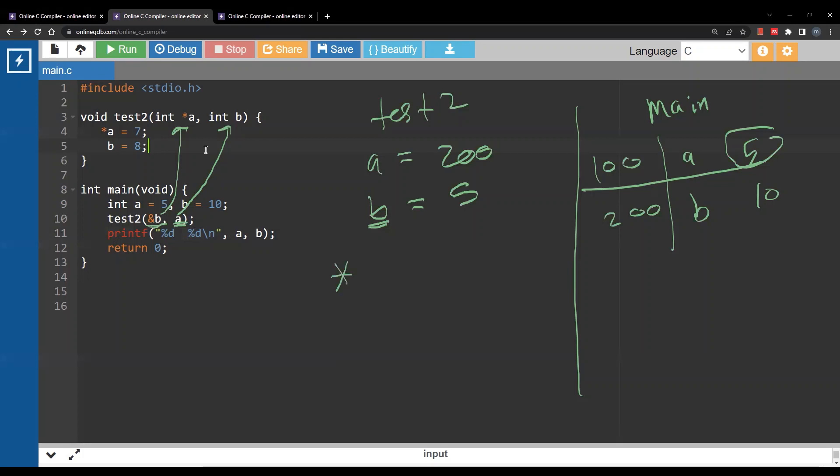What do you do next? You write seven inside star a. Now a itself is 200, so star a means move from 200 to the variable b inside main. What do you do with b? Write seven inside that variable. Now what is the next statement? Next statement is b equal eight. Now we have two b's. We have b here and b here. Which one do I change? b in this case is the local variable in test2 because I am inside the function test2. It's not a pointer. There is no star. It's just the local variable b. Change it from five to eight.